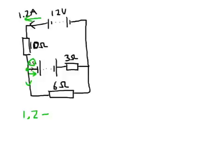So 1.2 minus 0.5 equals our unknown current, which is 0.7 amps. So that's nice and easy to find, 0.7 amps there.